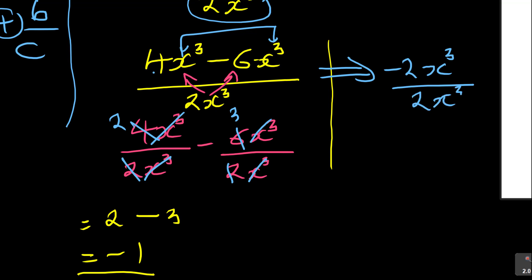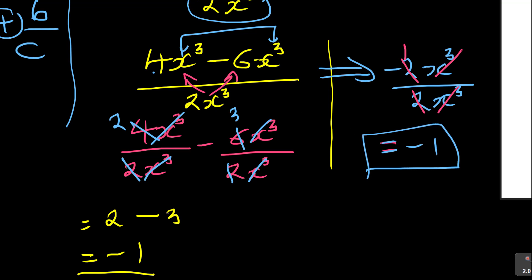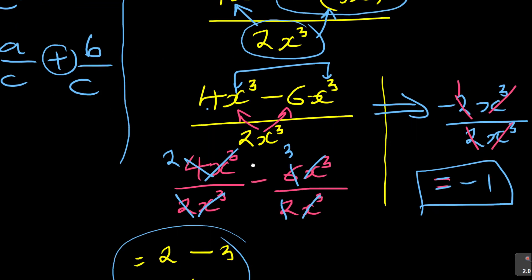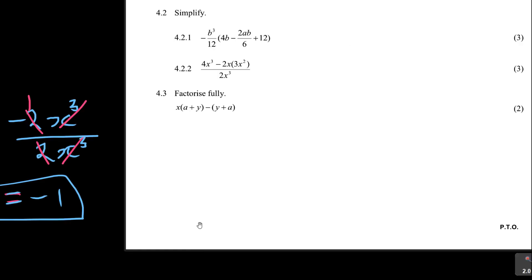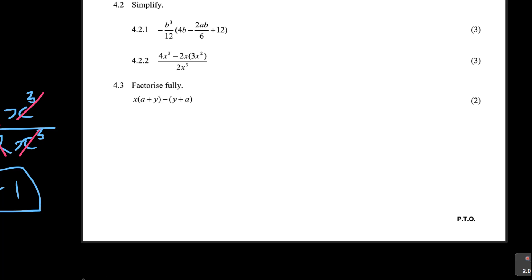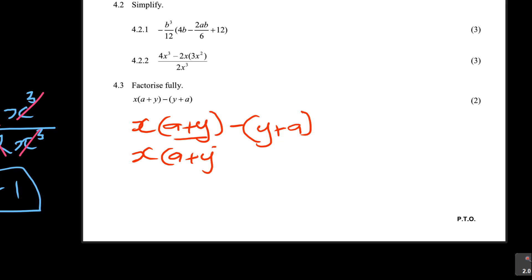The answer is negative one. Now for the factorization question: x(a + y) minus (y + a). Look at the signs - a plus y and y plus a are the same thing. Just like a plus b is the same as b plus a. So a minus b is the same as minus b plus a.